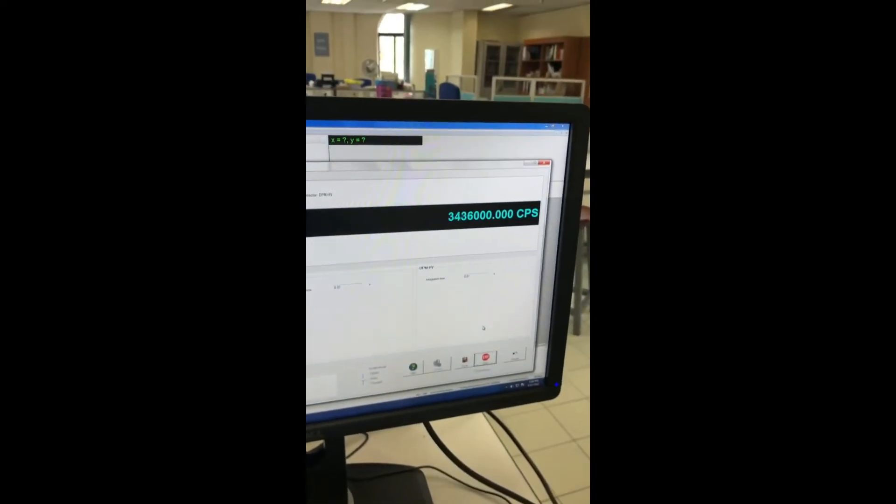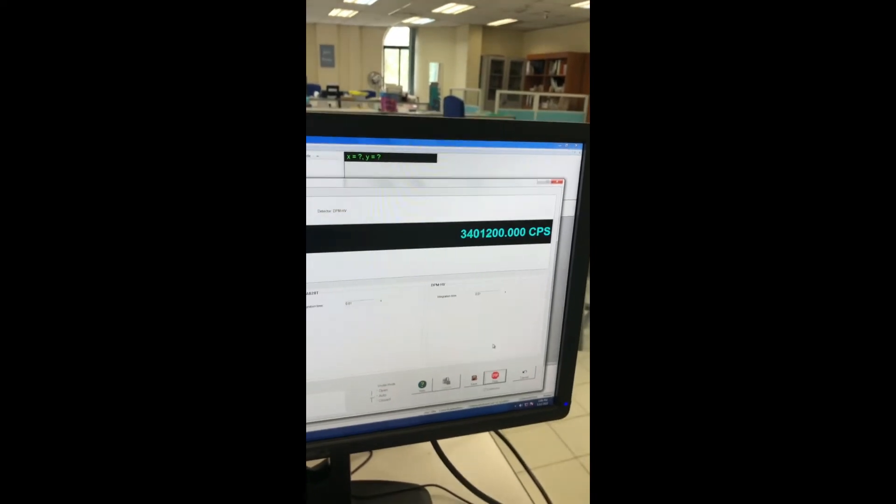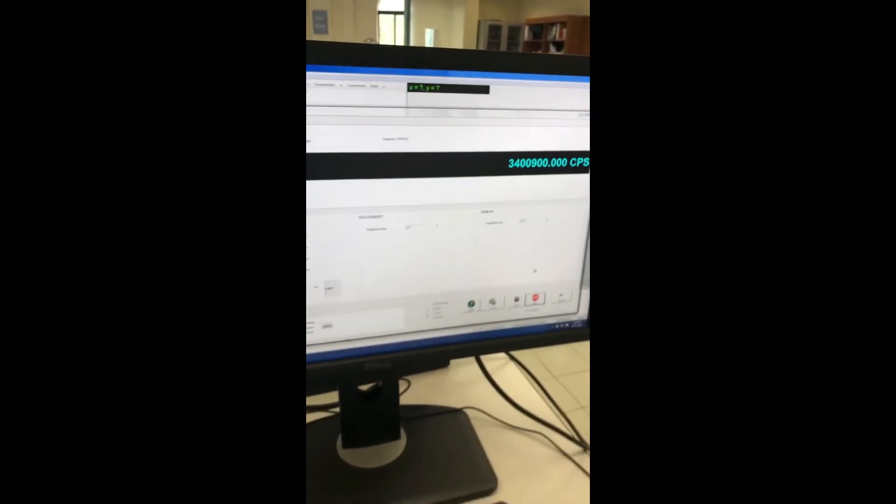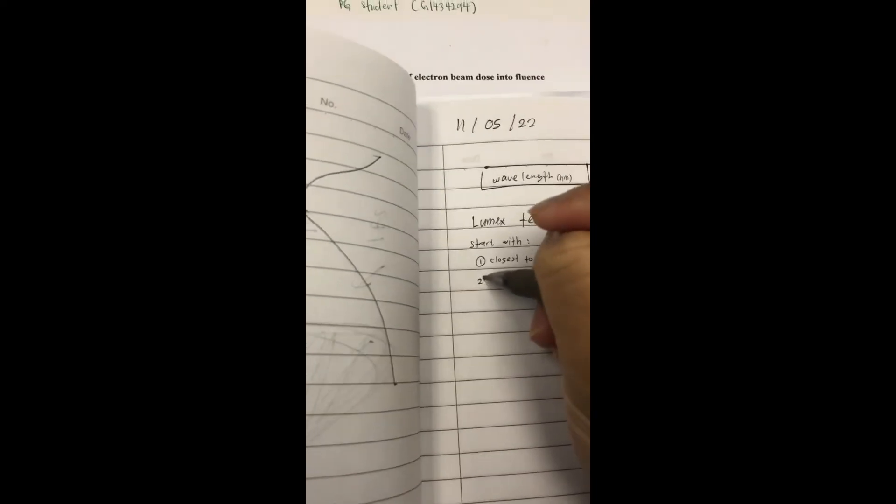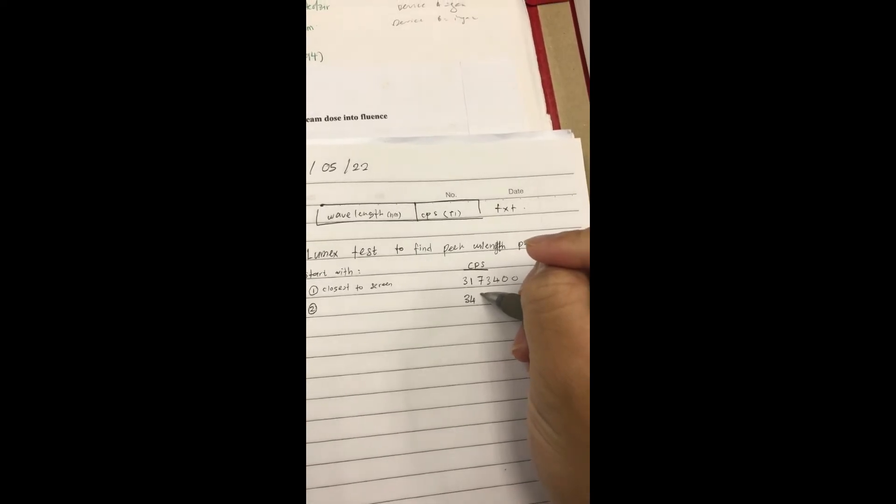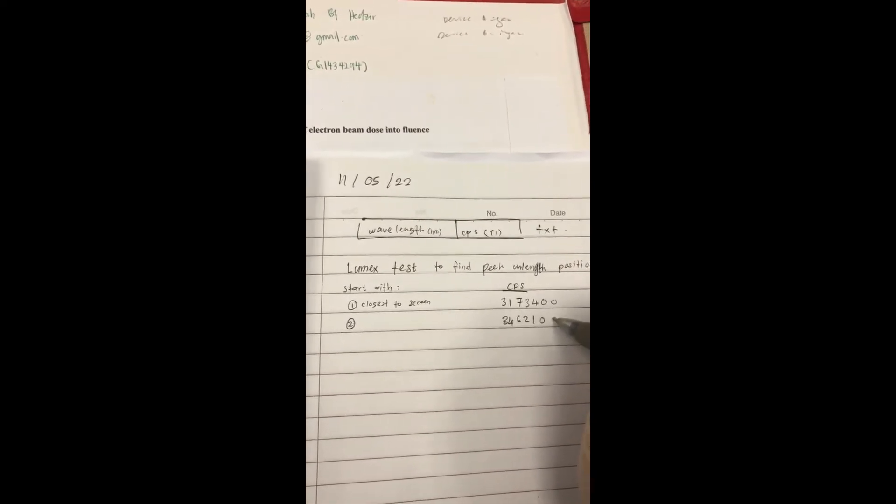You can see that the value of the CPS is going up. Next, jot down number two for the middle. We have around 346,210.00. So as you can see that the value is increasing.